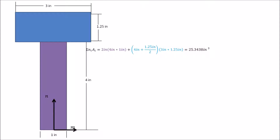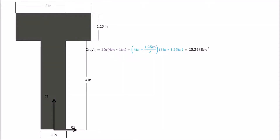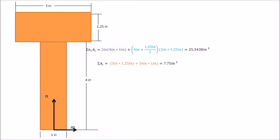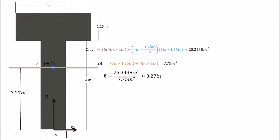Now that we've calculated the summation of ȳᵢAᵢ, we need the total area of the cross section. The cross section is just two rectangles: one 3 inches by 1.25 inches and the other 4 inches by 1 inch, for a total area of 7.75 inches squared. Using these two values, we can solve for the neutral axis point, which is approximately 3.27 inches up from the base of the web.